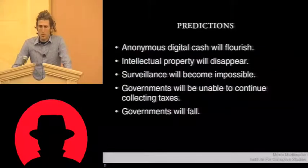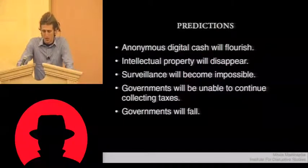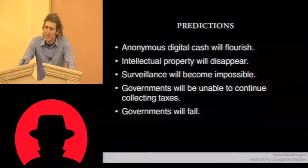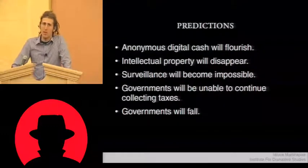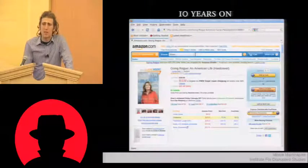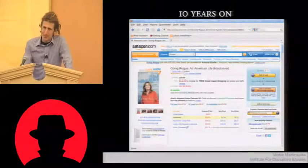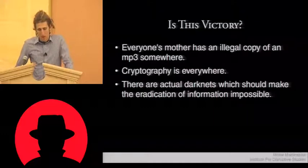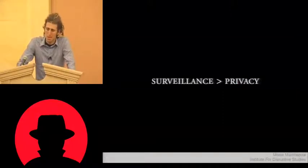That it's hard to control. But then if you go and you look at their predictions of what would happen once cryptography was ubiquitous, they're somewhat less prescient. That anonymous digital cash would flourish. That intellectual property would disappear. That surveillance would become impossible. That governments would be unable to continue collecting taxes. And that eventually governments would fall. All from the distribution of cryptography. If we flash forward 10 years from sort of the mark of these predictions, cryptography is the thing that allows you to securely transmit your credit card number to Amazon.com so you can buy a copy of Sarah Palin's book, Going Rogue. Sure, some of these things have been eroded. But surveillance is probably at an all-time high. And privacy is probably at an all-time low.